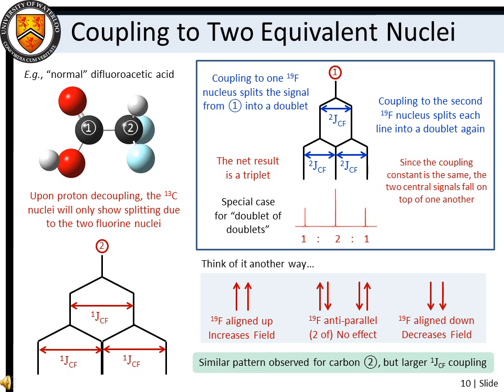If a nucleus is instead spin-coupled to two equivalent nuclei, the interaction is such that a triplet pattern is produced. This can be considered a special case for a doublet of doublets, wherein the two central transitions have overlapped due to the identical spin-coupling interactions. As a result, the relative intensities for the multiplet components of a triplet are 1-2-1.